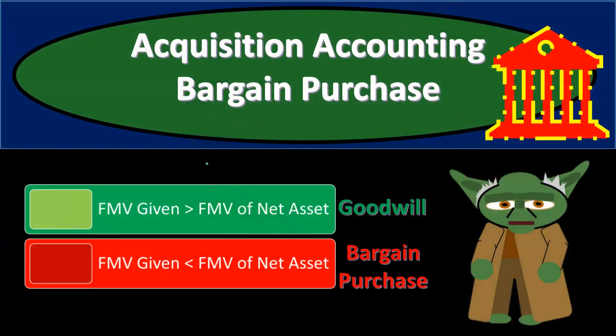We can basically think of the bargain purchase as the opposite of goodwill. In a prior presentation we talked about goodwill within an acquisition, which results when the fair market value of the consideration given — basically the purchasing price — is greater than the fair market value of the net assets. We look at the books of the company being acquired, revalue their assets and liabilities to fair market value, and if the consideration given is greater than those net assets, that results in goodwill.